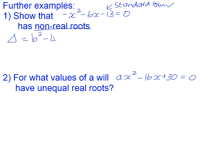So delta is b² - 4ac, which will be (-6)² minus 4 times (-1) times (-13). And that gives us a delta value of -16.